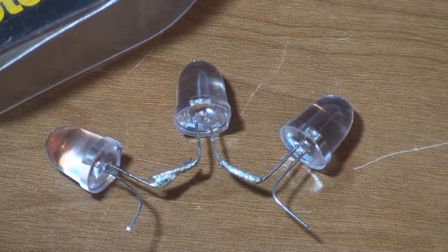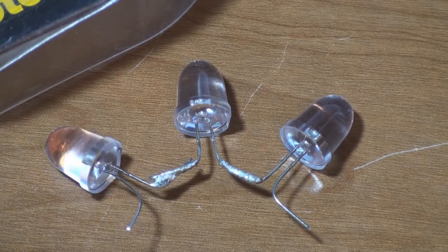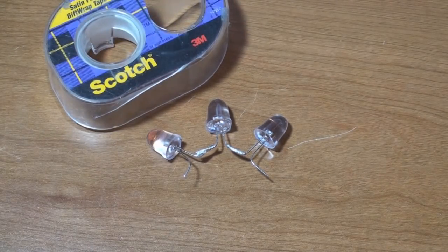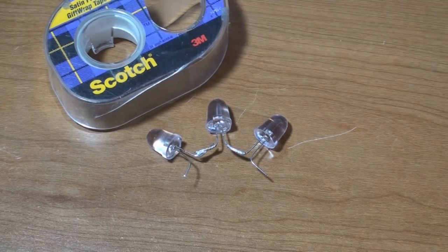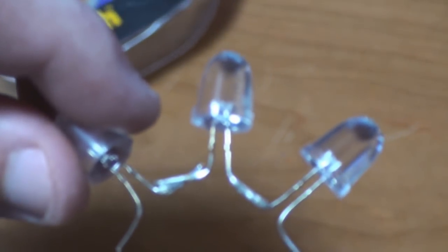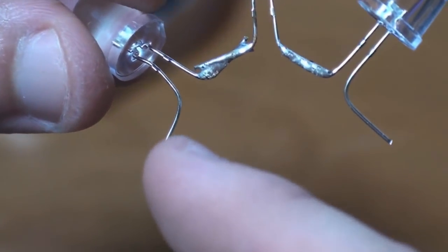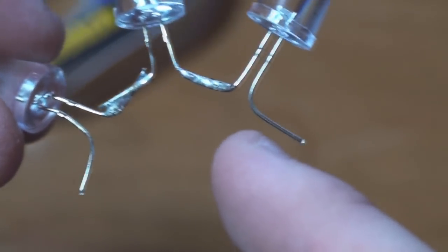Once you get it all soldered it should look something like this. If you have trouble keeping the LED still when you're soldering, what I found the easiest thing to do is just get some scotch tape and flip it upside down and stick the LEDs on there first. That will help you keep it stable. If we take a look at this, you'll notice all the LEDs are going from starting with this leg at the end, going positive negative positive negative positive and negative.